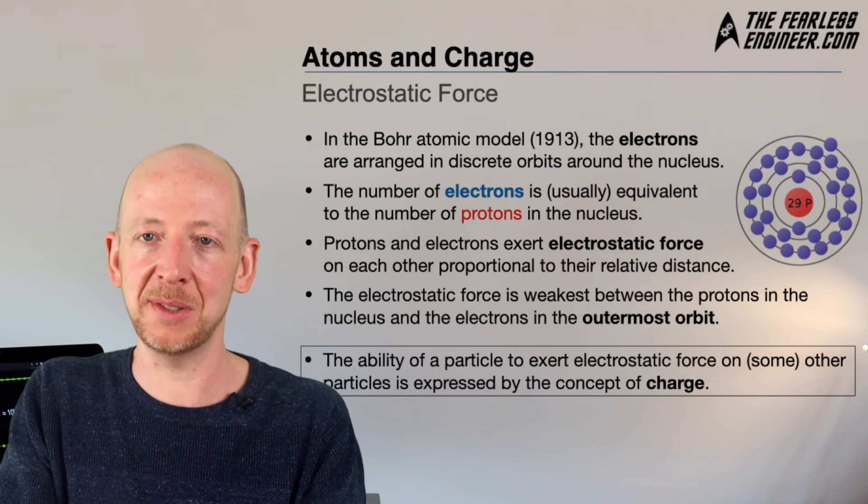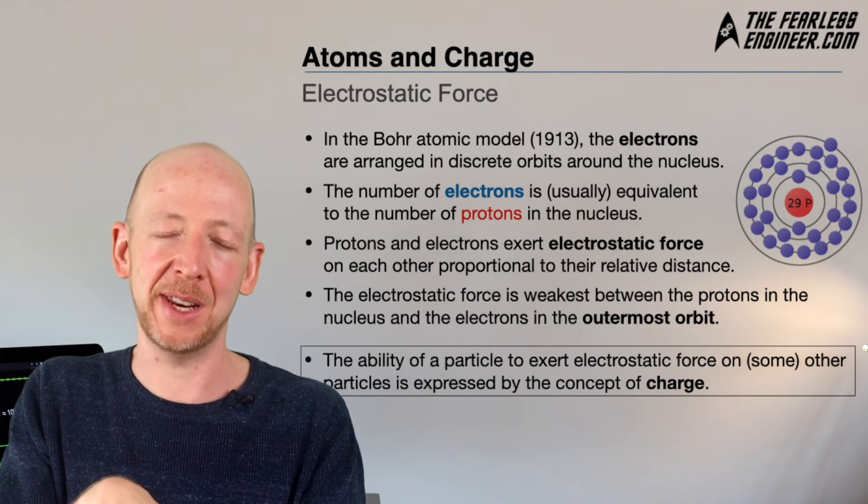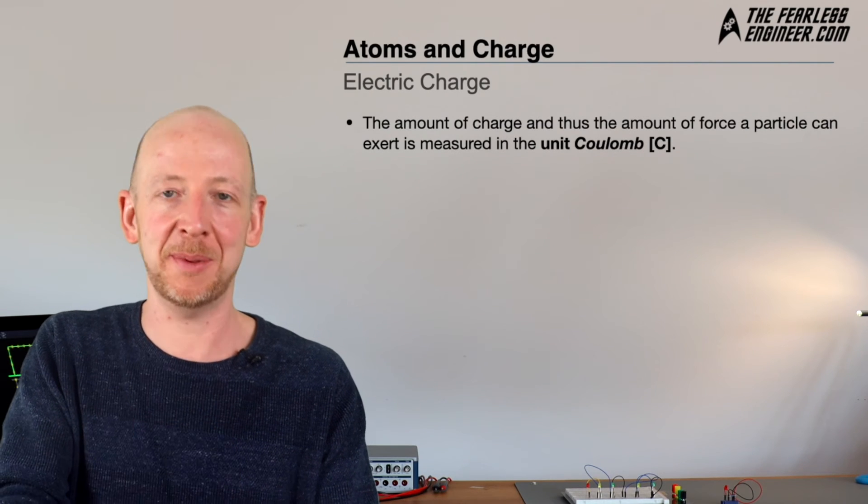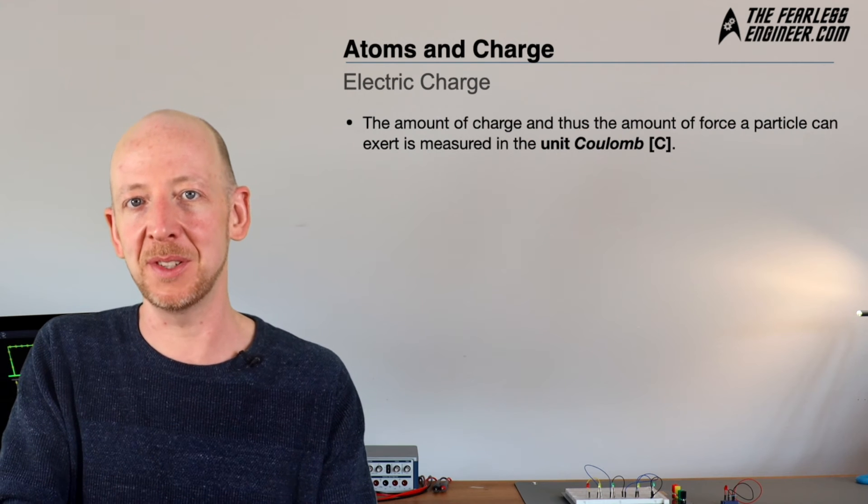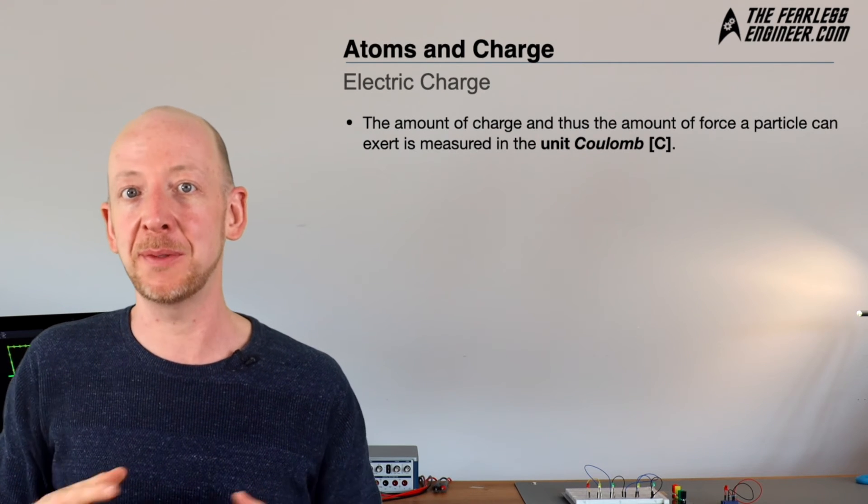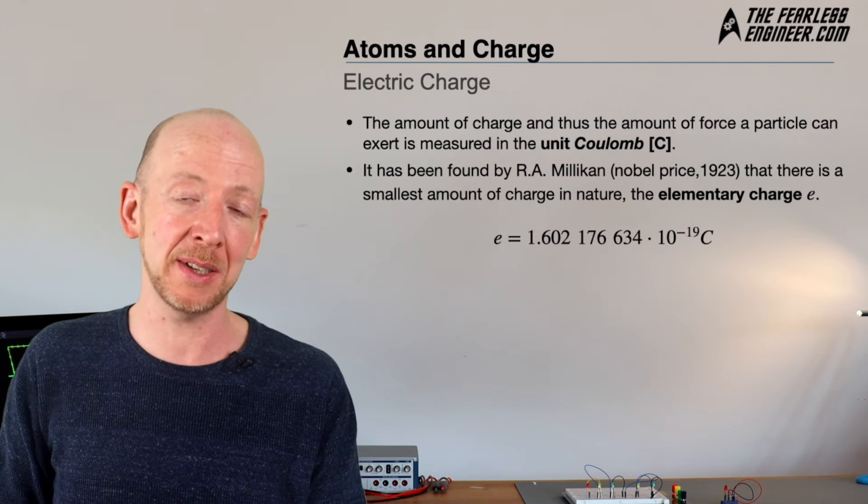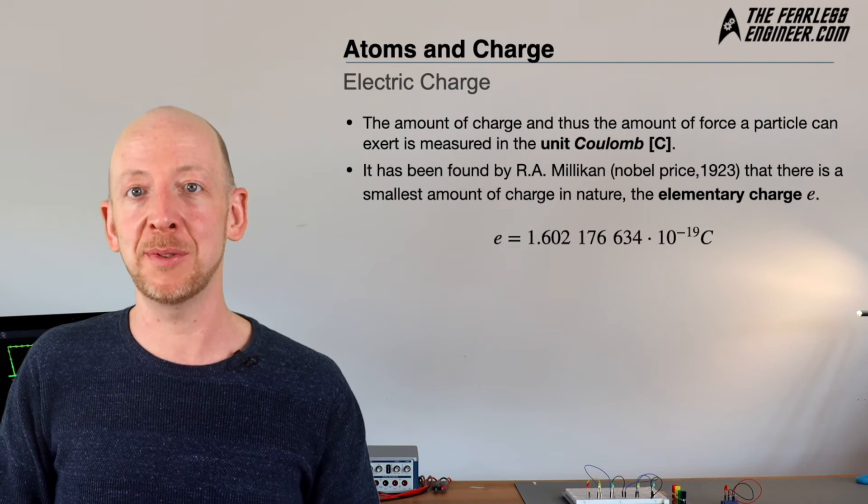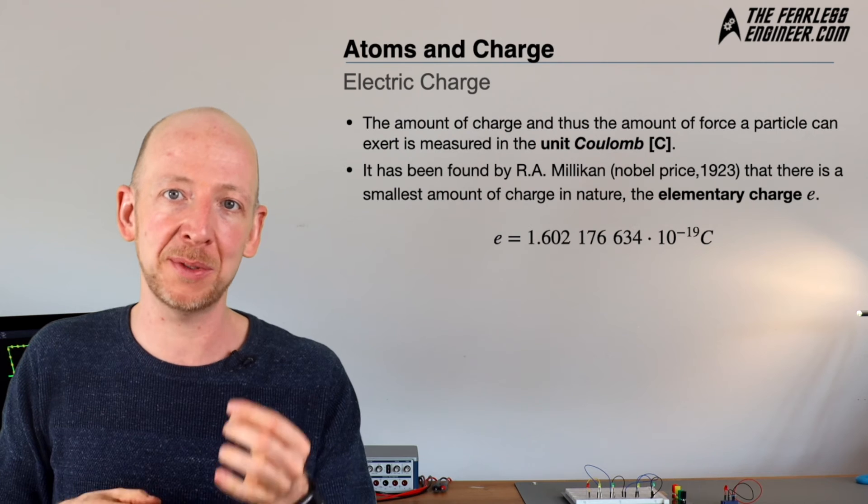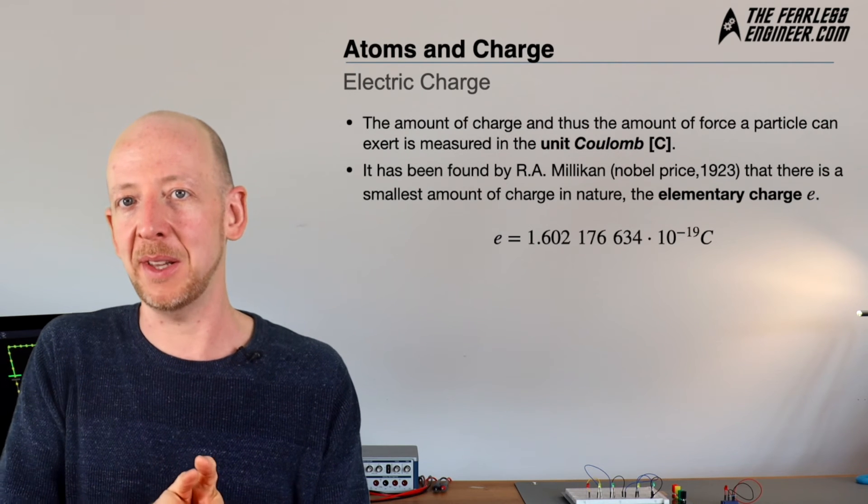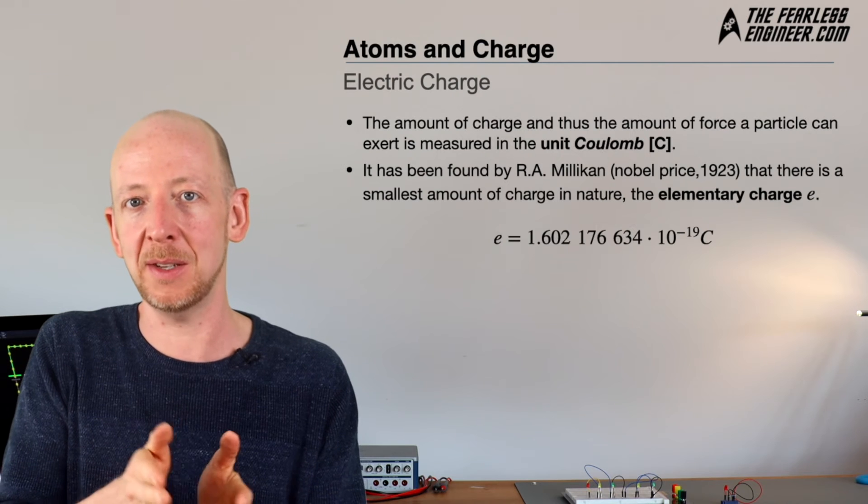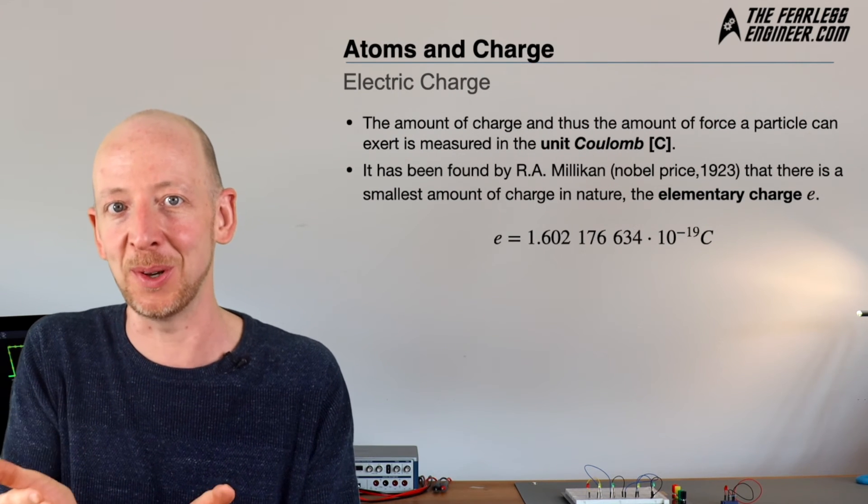The amount of charge—the amount of force a particle can exert on other particles—is measured in the unit Coulomb, abbreviated by capital C. It was found by R.A. Millikan, who won the Nobel Prize in 1923, that there is a smallest amount of charge in nature called the elementary charge, e. It's very small: 1.602 times 10 to the power of minus 19 Coulomb.